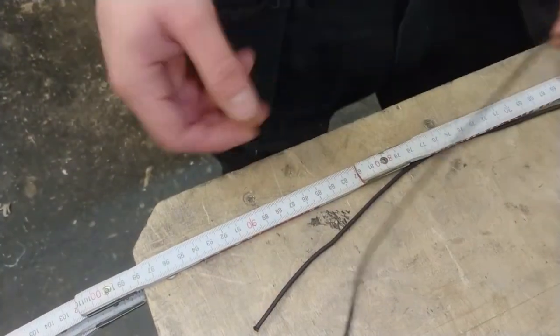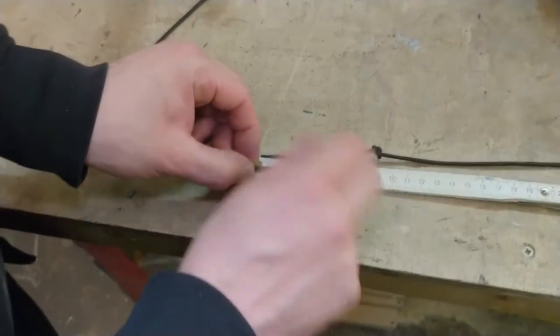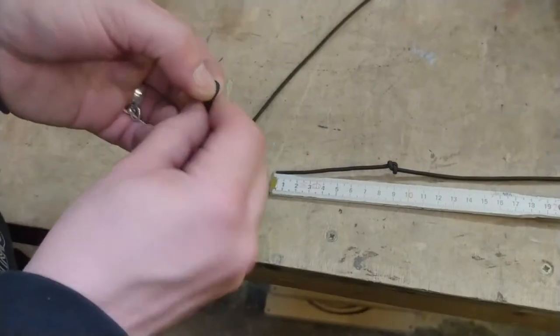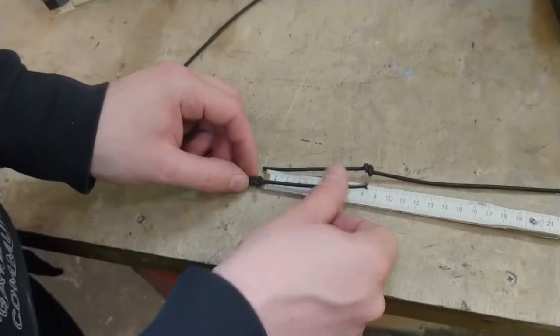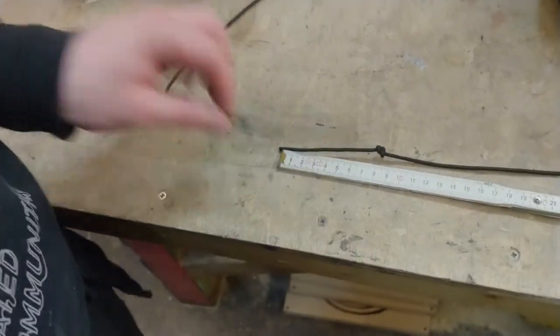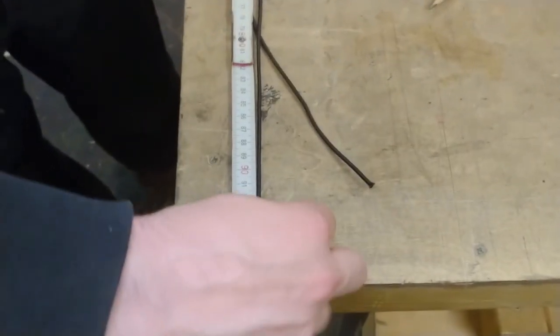And now let's repeat the procedure. Roughly there. Let's tie that knot. Let me see where we are at. Good. Yeah, a wee bit over like the other one. Good. So 94cm it was.